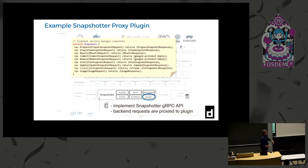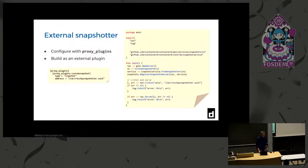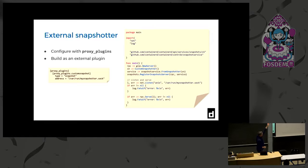If you have your own custom filesystem, this is the API you implement to become a snapshotter. You can run it as a separate process - listen on a socket, change the proxy plugin configuration to point to your new snapshotter, and now you have the ability to use that within containerd.